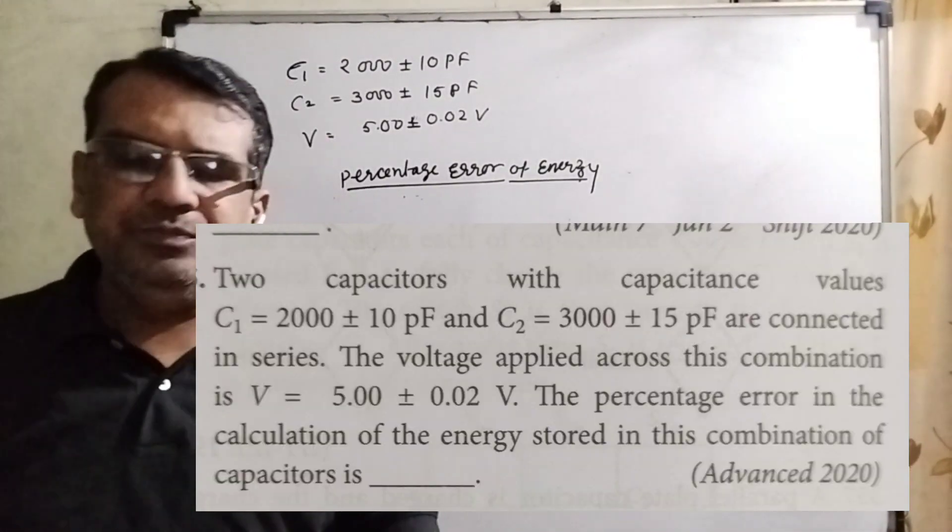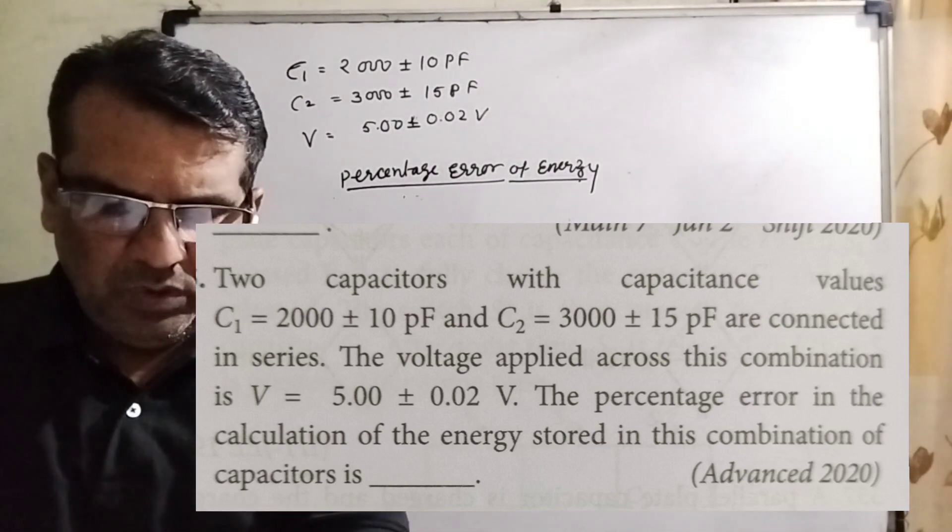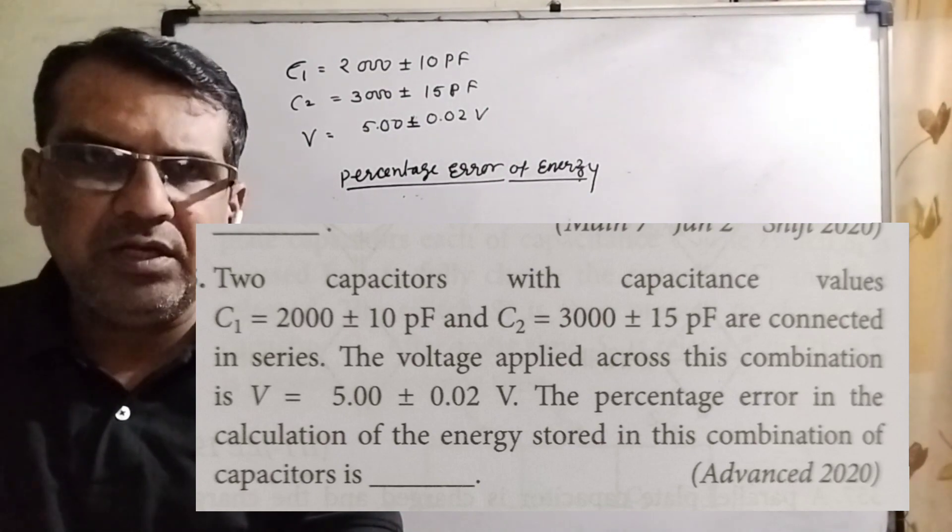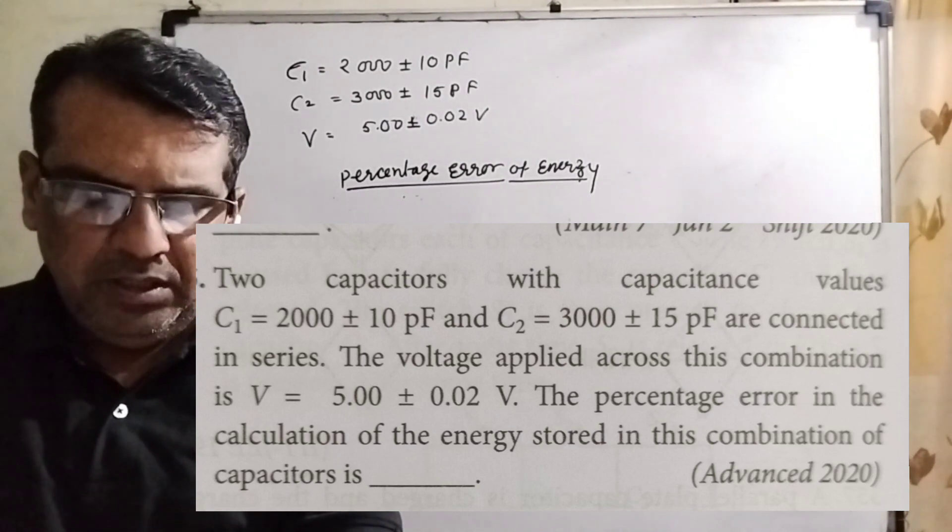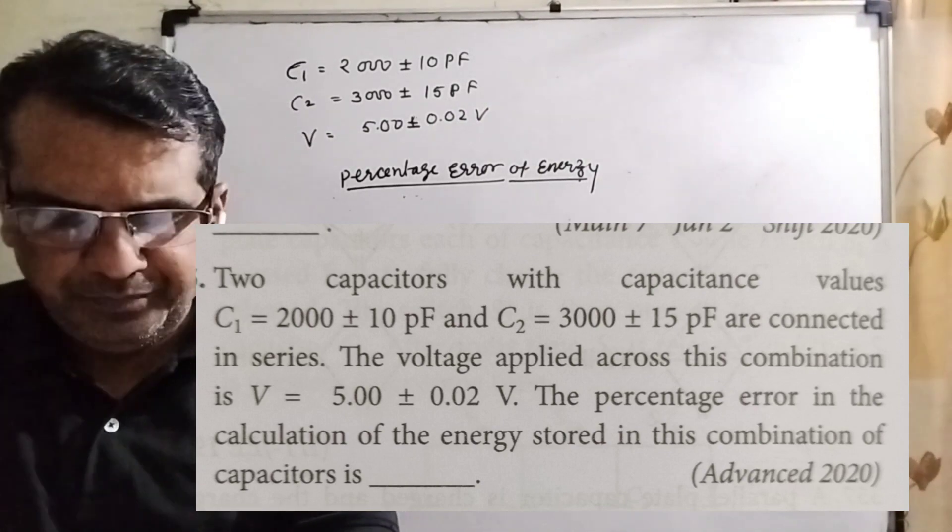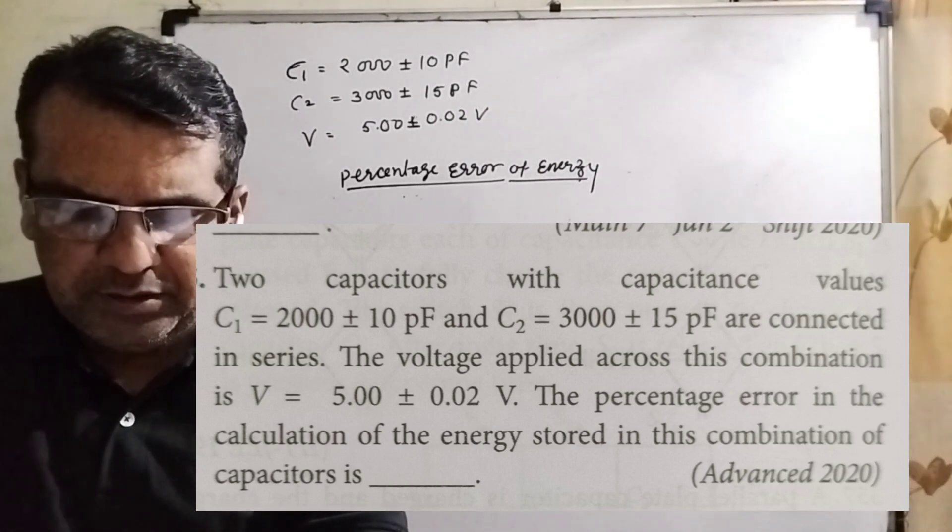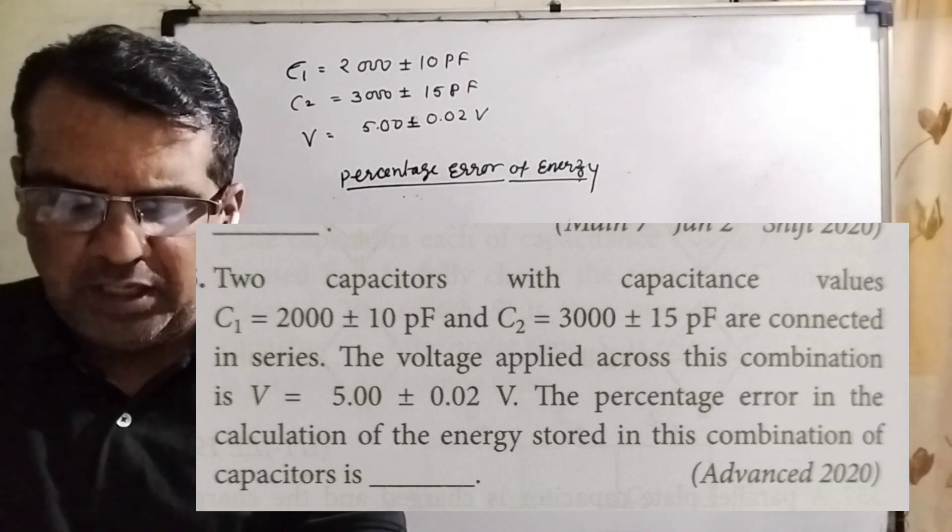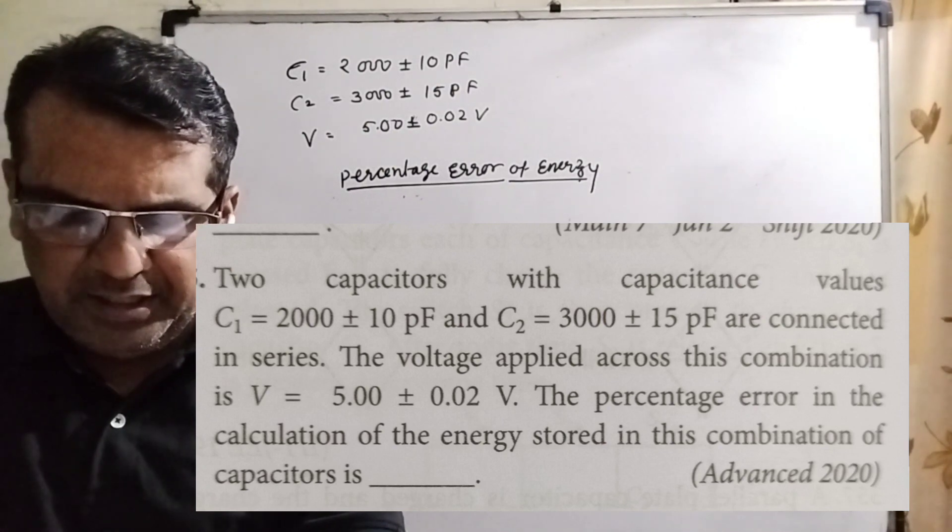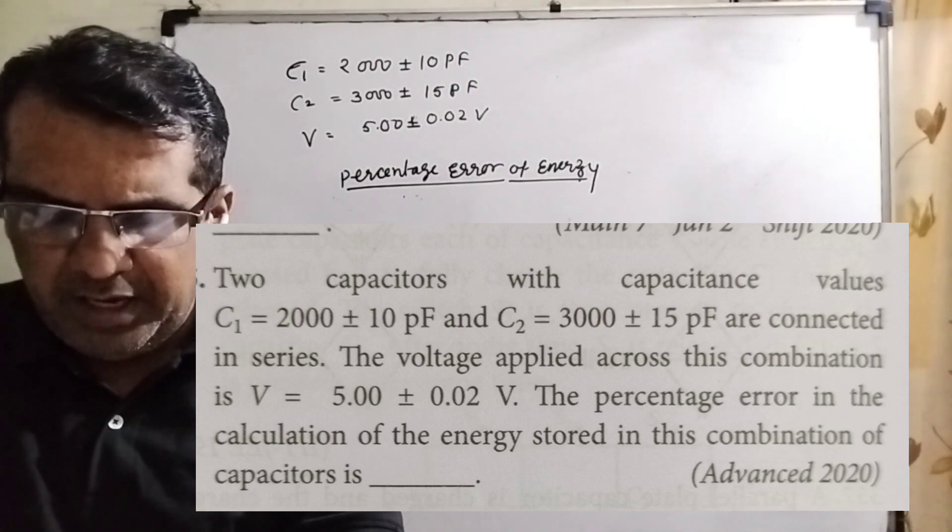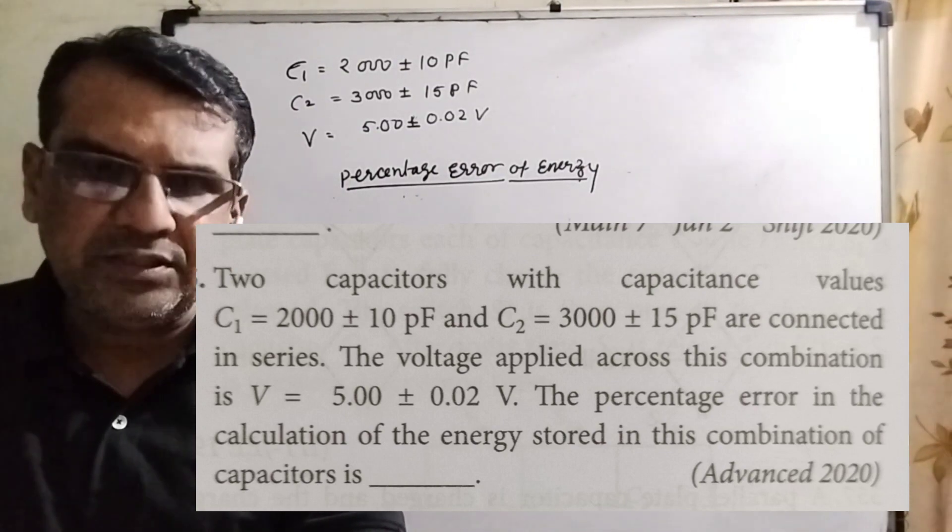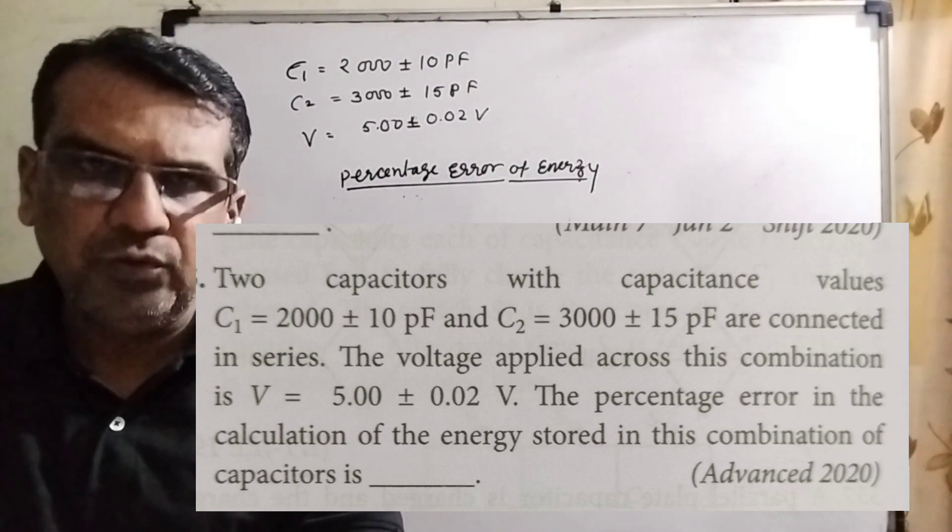Let's see what the question says. Two capacitors with capacitance values C1 equal to 2000 plus minus 10 picofarad, where 10 is the error, and C2 equal to 3000 plus minus 15 picofarad are connected in series.